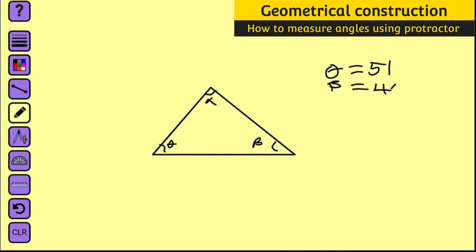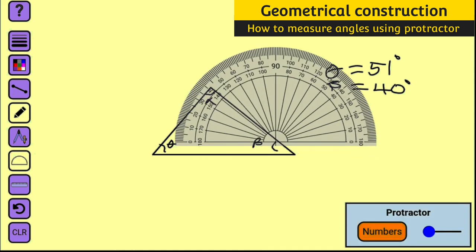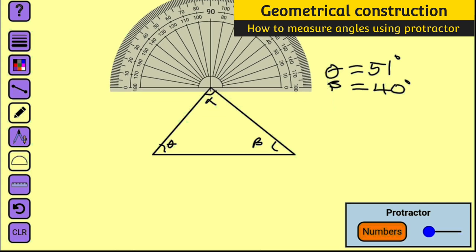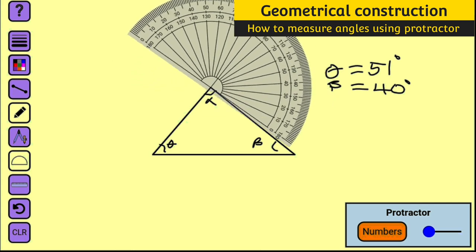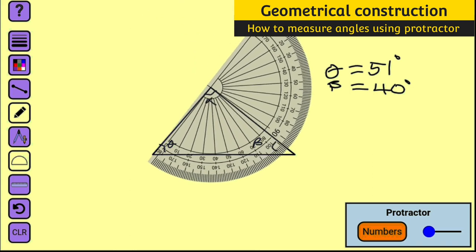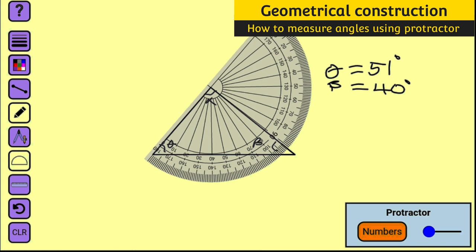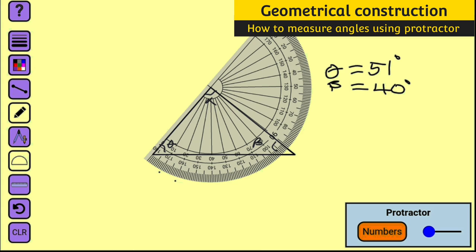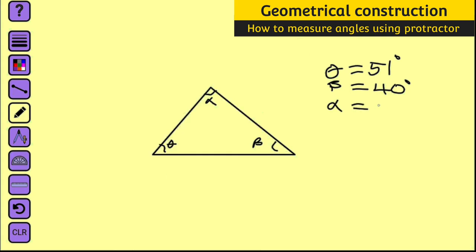Let us measure the last one. Let me bring it here and swap it like this. So now let us measure that. This is 10, 20, 30, 40, 50, 60, 70, 80, 89. You see, remain 1 for it to complete 90. Alpha is equal to 89.